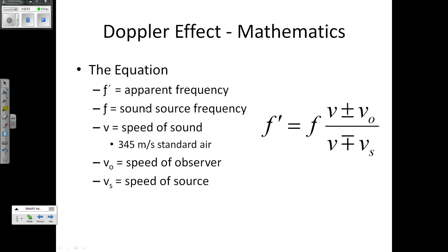Mathematically, the Doppler Effect can be expressed in this equation using the following symbols. There is an F with what looks like an apostrophe — we are going to call that F prime. That is the apparent frequency, or the frequency that you hear while the object and you are in relative motion to one another. F itself is going to stand for the actual frequency being produced.